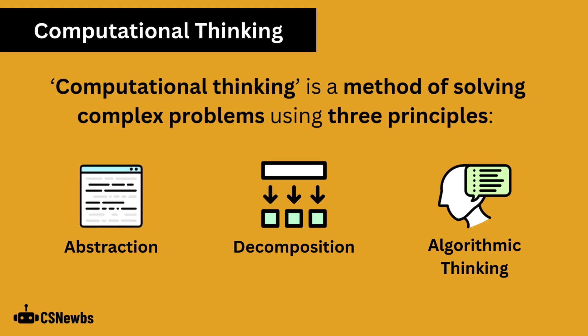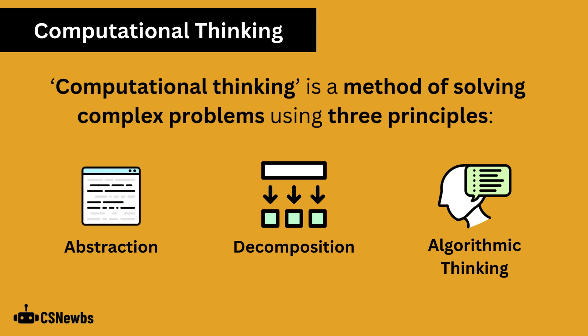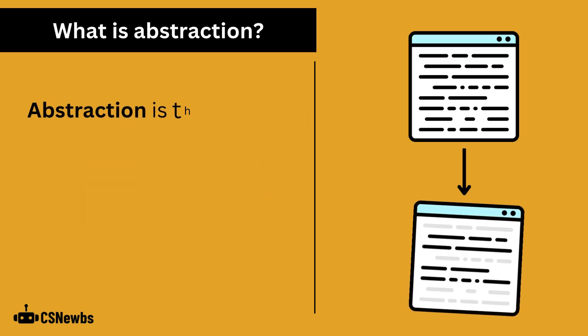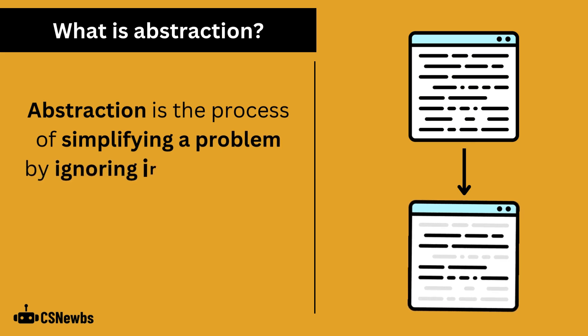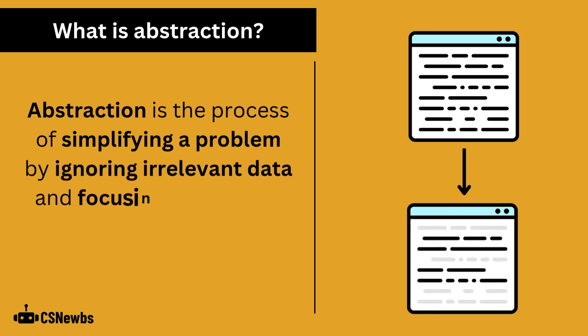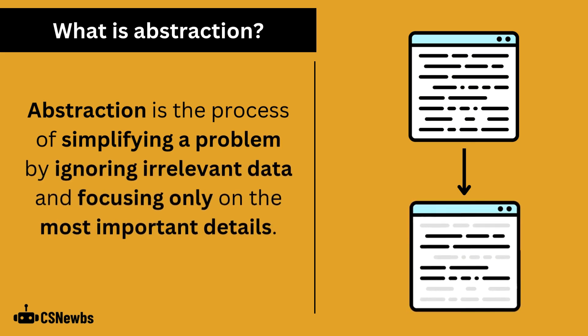Abstraction is one of the three principles of computational thinking, which are used to solve complex problems. Abstraction is the process of simplifying a problem by ignoring irrelevant data and focusing only on the most important details.